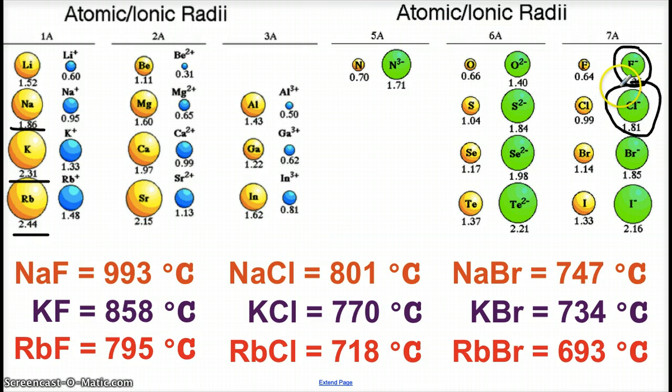Because of the distance increasing, we see the melting point going down. Same thing with sodium, potassium, and rubidium chloride. The chloride ion stays the same at 1.81 angstroms, but the sodium, potassium, and rubidium ions are getting bigger. Same with those compounds and bromides. You see the melting points decreasing due to the fact that the distance between ion centers is increasing.